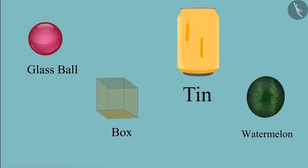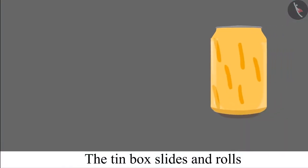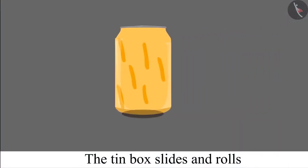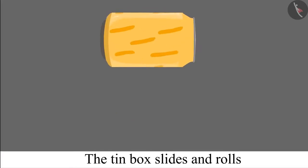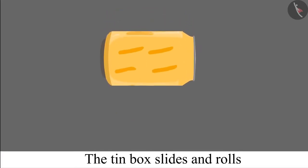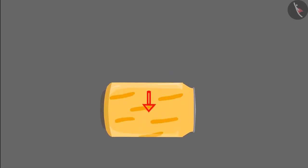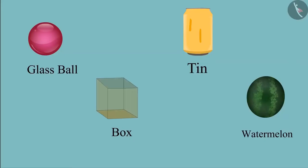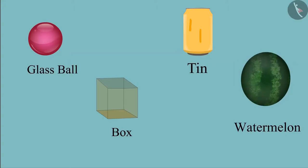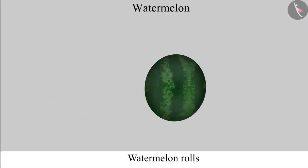Now let us see this tin box. It can slide because it has one surface which is not round. And it can also roll because it has a round surface also. And children, this is a watermelon. It is round, which means it will roll.